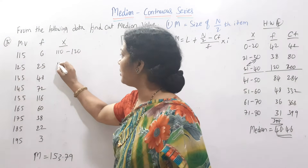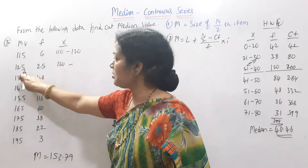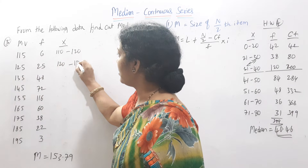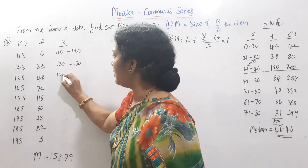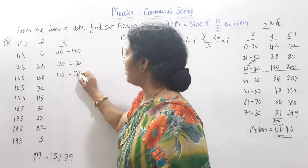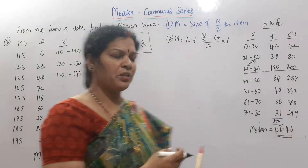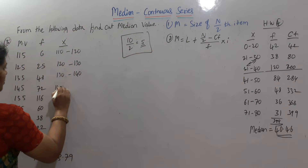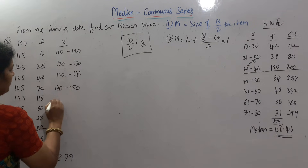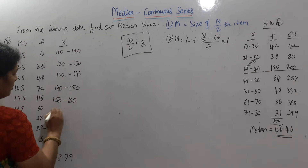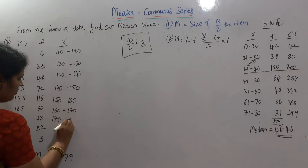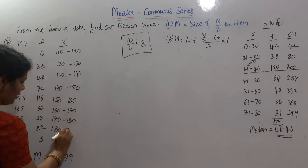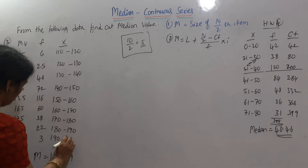If we minus this it is 120. If we add this it is 130. 135 minus 5 is 130. 135 plus 5 is 140. If we add this it is automatic: 140 to 150, 150 to 160, 160 to 170, 170 to 180, 180 to 190, 190 to 200.